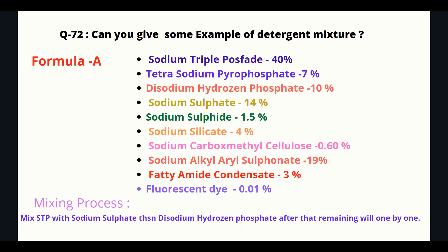Can you give an example of a detergent mixture? Formula A: sodium tripolyphosphate 40%, tetrasodium pyrophosphate 7%, disodium hydrogen phosphate 10%, sodium sulfate 14%, sodium silicate 1.5%, sodium silicate 4%, sodium carboxymethyl cellulose 0.6%, sodium alkyl aryl sulfonate 19%, fatty amide condensate 3%, fluorescent dye 0.01%. Mixing process: mix sodium tripolyphosphate with sodium sulfate first, then disodium hydrogen phosphate, after that remaining ingredients one by one.